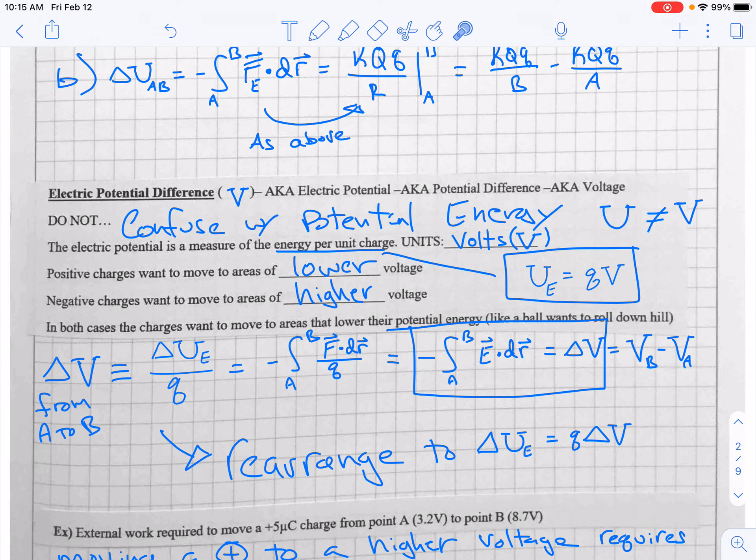And that when you look at the integral of energy, that was related to the dot product of force and displacement. But force divided by charge right here is electric field. That's what electric field was, the force per unit charge. So to find voltage difference, you can really just integrate the electric field if you need to. And just like U equaled QV, delta U equals Q delta V.